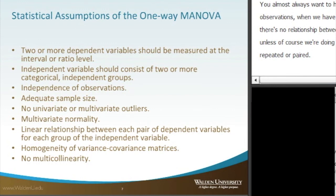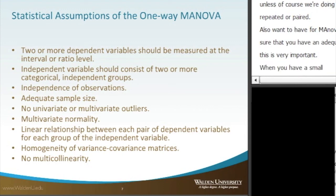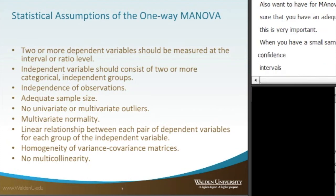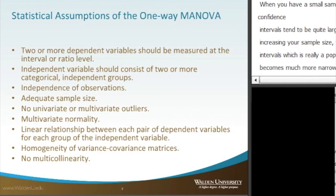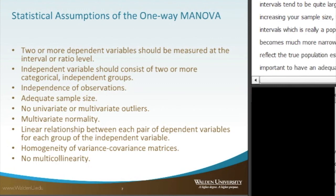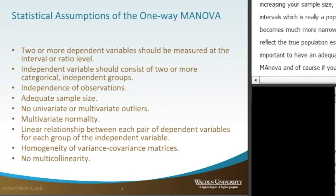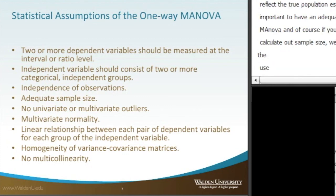For MANOVA, you want to make sure that you have an adequate sample size — this is very important. When you have a small sample size, the confidence intervals tend to be quite large. But by increasing your sample size, the confidence intervals — which represent the population estimate — become much more narrow and begin to truly reflect the true population estimate. If you need to calculate sample size, we often recommend the use of G-Power software, and we have a number of tutorials on how to use it.